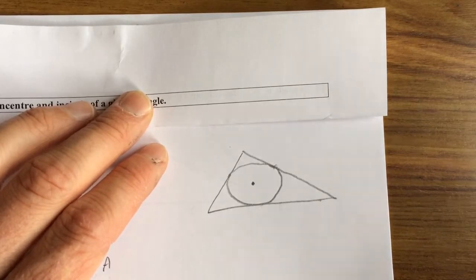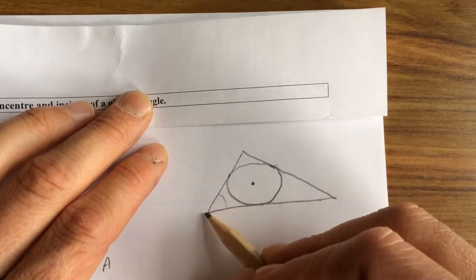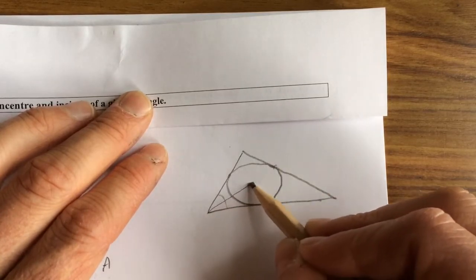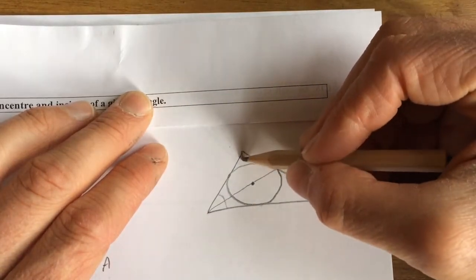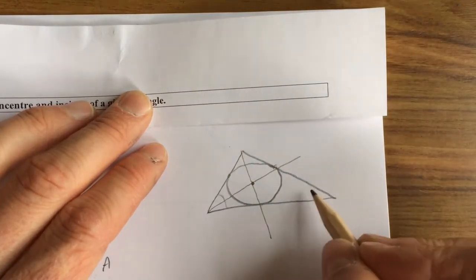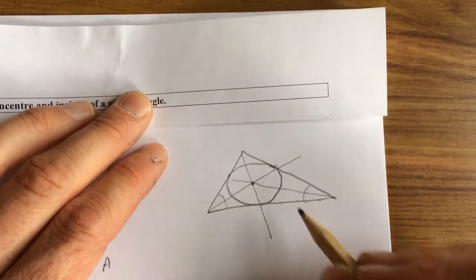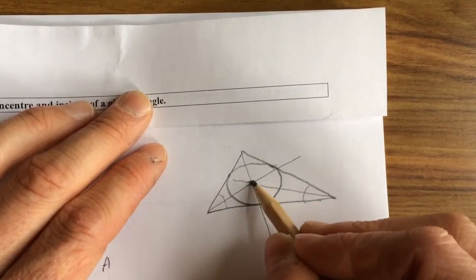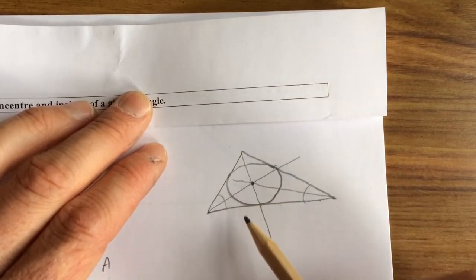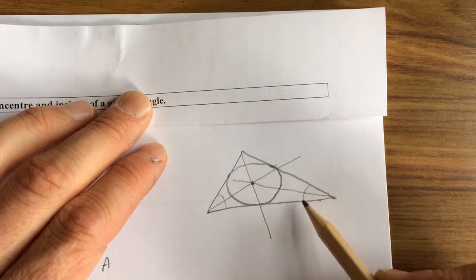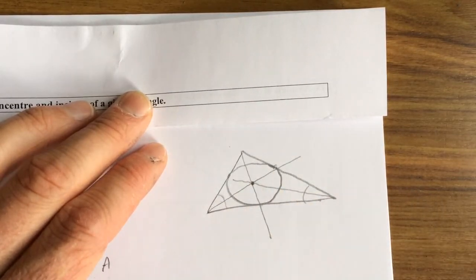And where the bisectors cross—there's one bisector, you'll bisect this and you'll bisect this—the bisectors of the angles will meet at the incenter. Now in order to find the center, it's only necessary that we bisect any two angles.